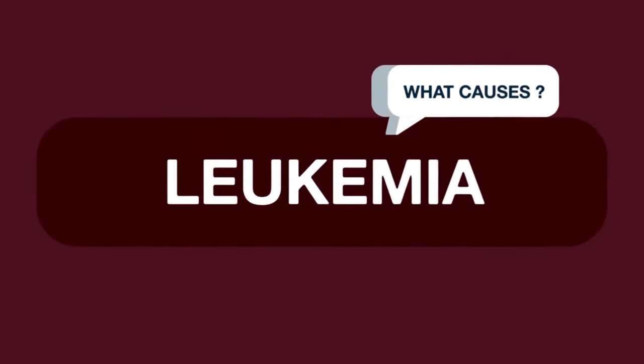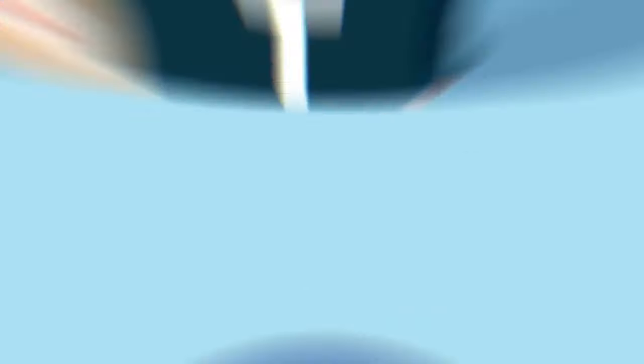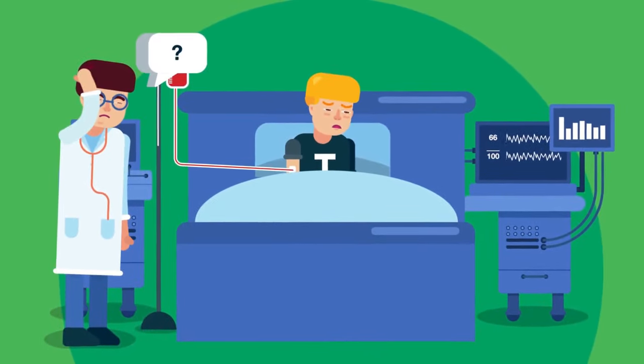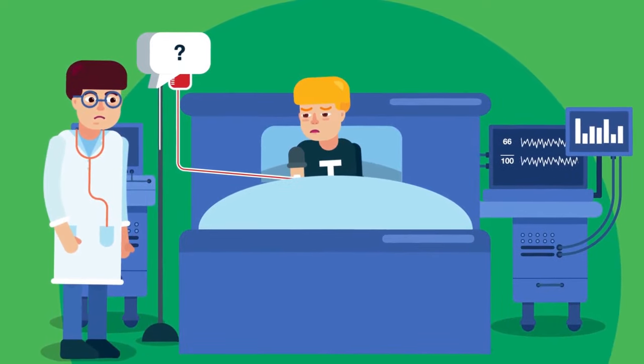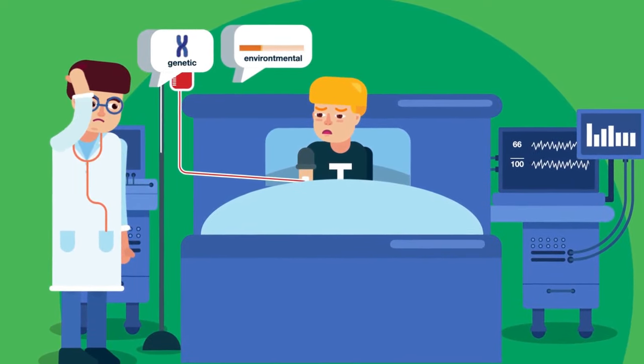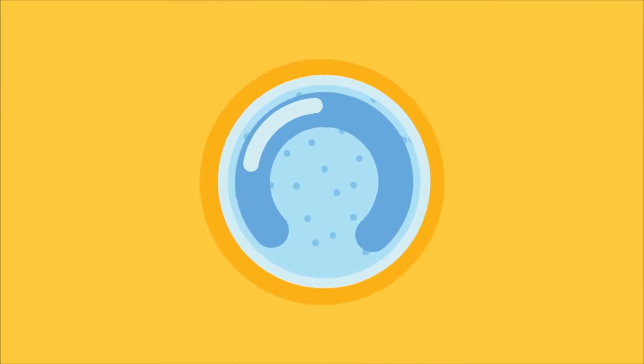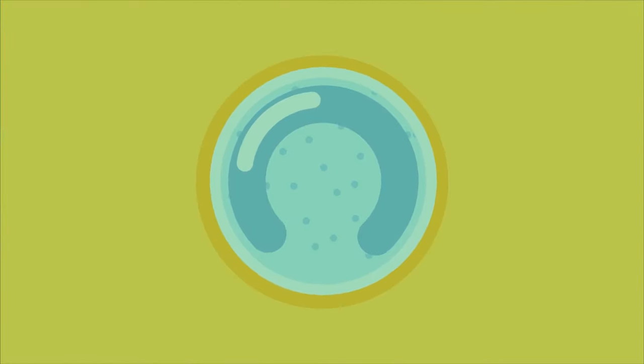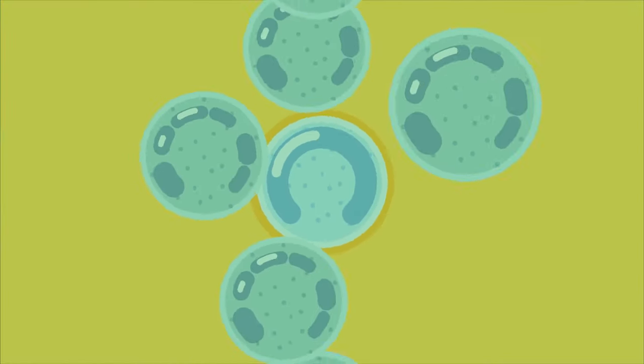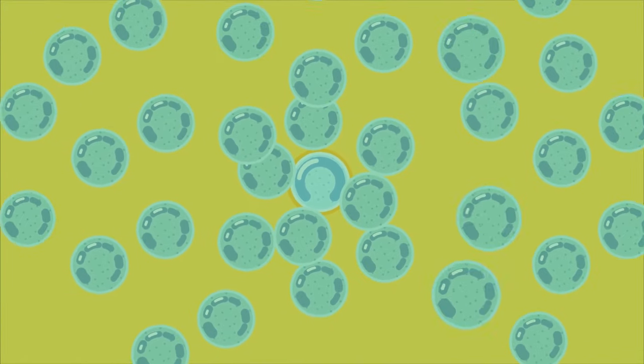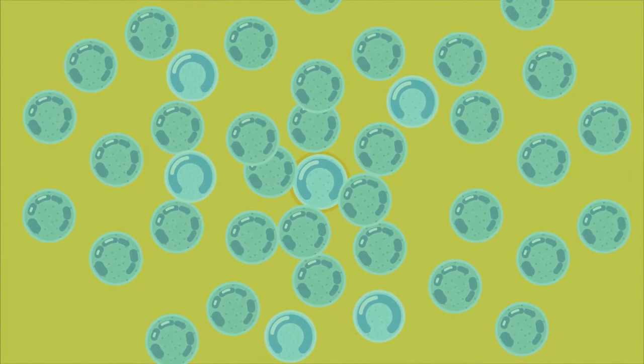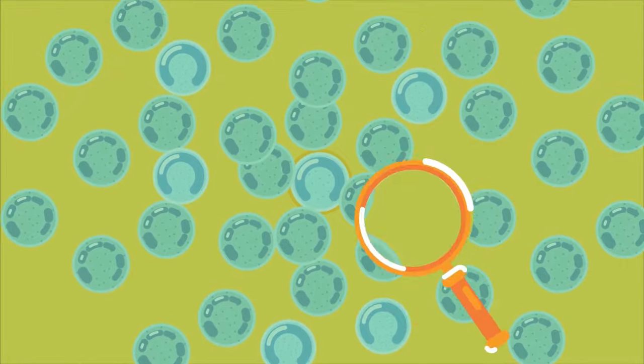What causes leukemia? Is leukemia hereditary? The exact cause of leukemia is not known, but it is thought to involve a combination of genetic and environmental factors. Leukemia cells have acquired mutations in their DNA that cause them to grow abnormally and lose functions of typical white blood cells. It is not clear what causes these mutations to occur.